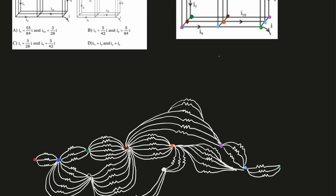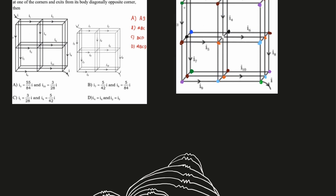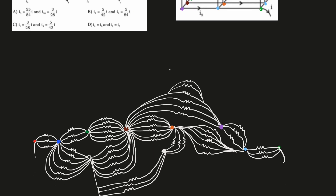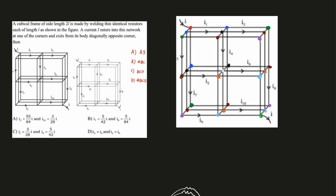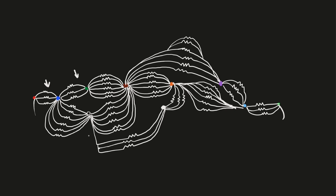Now that I've identified all the equipotential points, the next step is to redraw the circuit in a simplified form. It might look a bit complicated but it's not so bad. Starting from the red point, I draw the blue points next — there are three red-to-blue connections, so three resistors. From blue there are two other points: black and dark green. Blue to dark green has three connections, and blue to black has six connections, giving three here, three there, and six here.